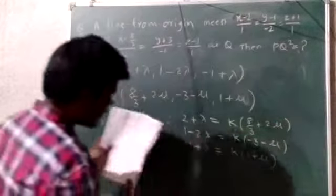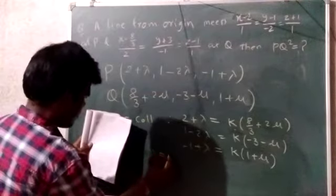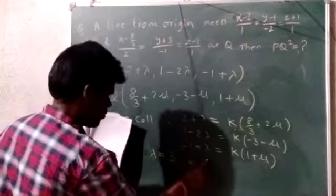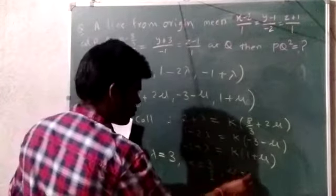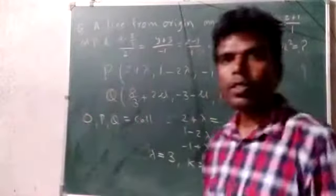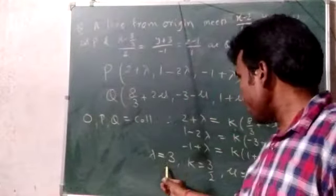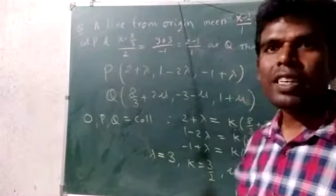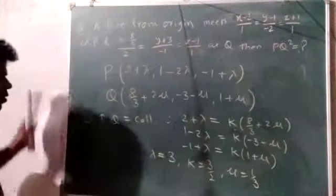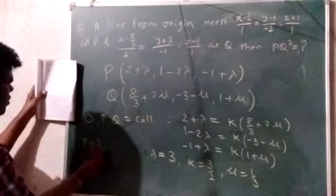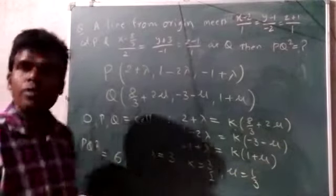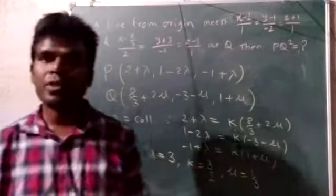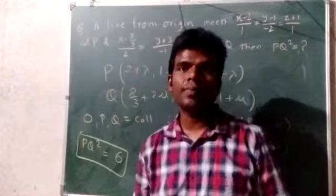So lambda, we have to solve this. Lambda equals 3, k equals 3/2, and mu equals 1/3. This will give you PQ, hence PQ squared. You can find that PQ squared is something like 6, though if there is a mistake in the calculations, this is definitely the final answer. That's it.